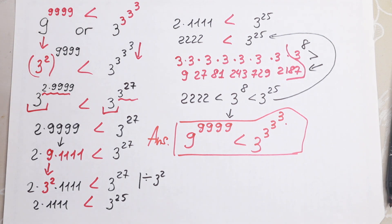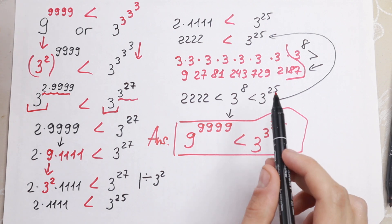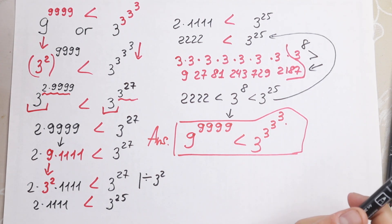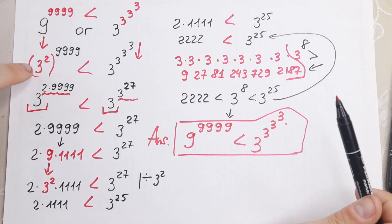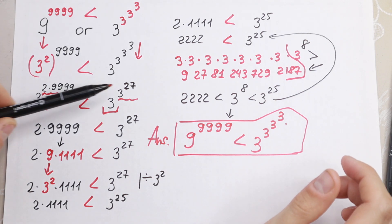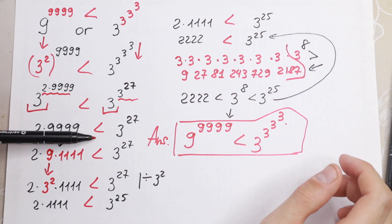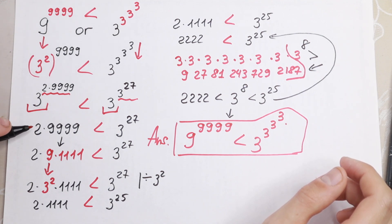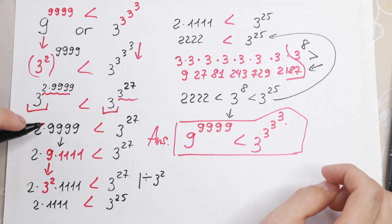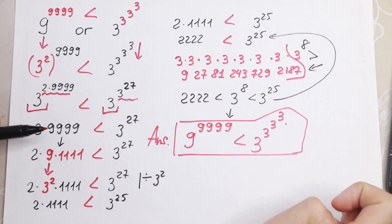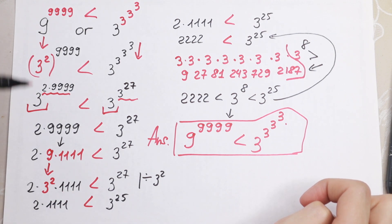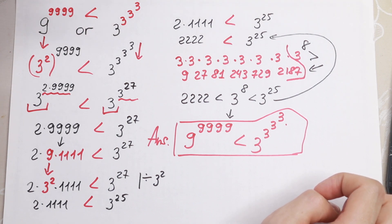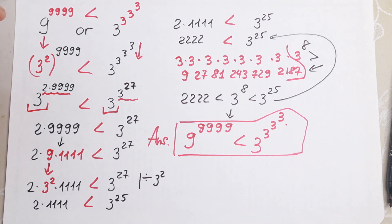If you still have any questions, write a question in the comments. Write a suggestion in the comments about this method — maybe you have a faster method to solve it. My approach was: find the same base, then compare the exponents, reject the bases since they are equal, and compare the powers. We cancelled by 3 squared first, and as you can see, the right side is greater than the left. Thank you for watching and see you in the next videos.